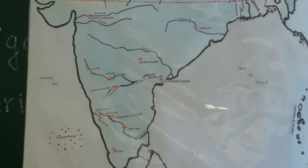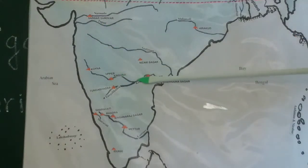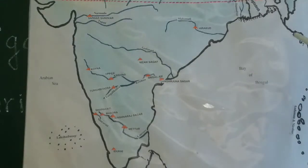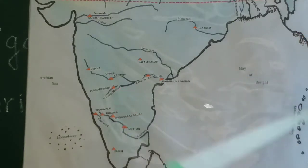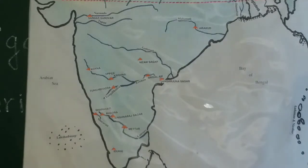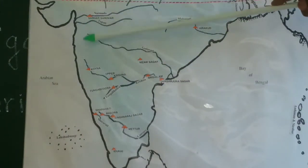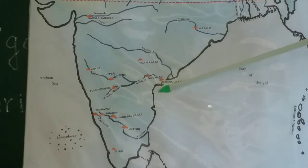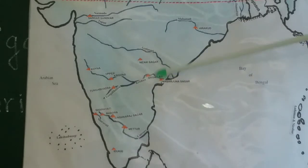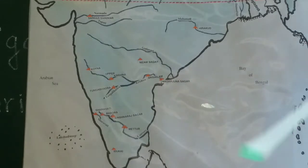From Mahabaleshwar, Krishna flows down south then towards east. It is joined by a number of tributaries — Bhima, Tungabhadra, Koyna, Ghataprabha, Malaprabha. All these rivers happen to be tributaries of Krishna river. Across river Krishna we have built the Nagarjuna Sagar dam, which is the chief dam there.